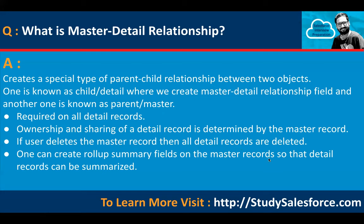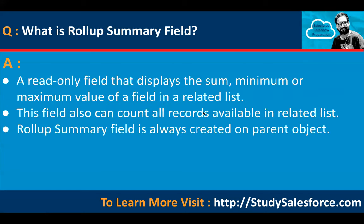One can create rollup summary fields on a master record so that detail records can be summarized. This is a special feature available only with master-detail relationship, not with lookup. What is a rollup summary field? It is a read-only field that displays the sum, minimum, or maximum value of a field in a related list.